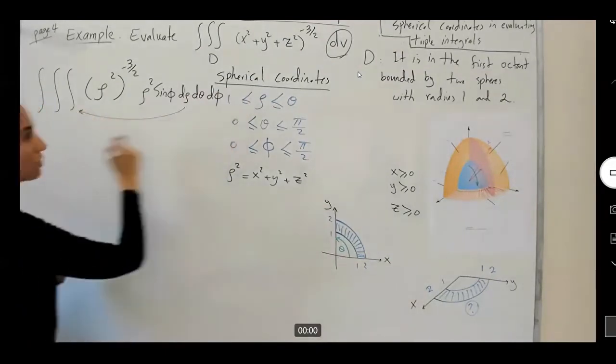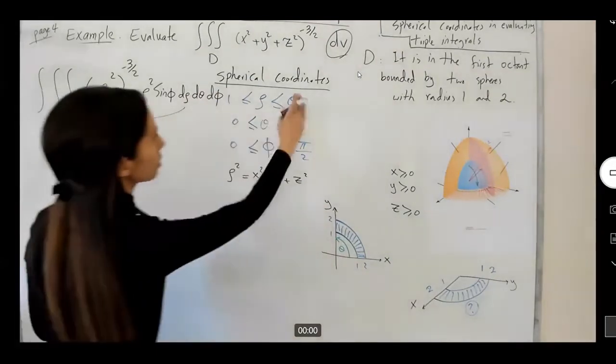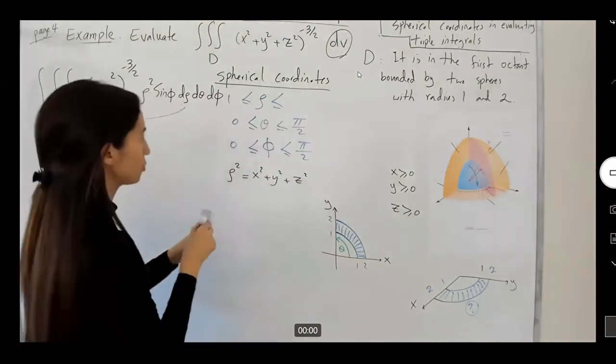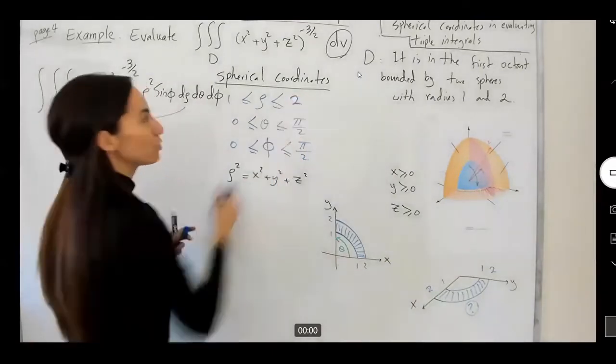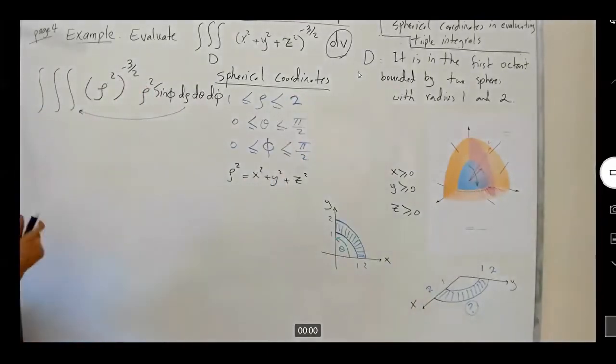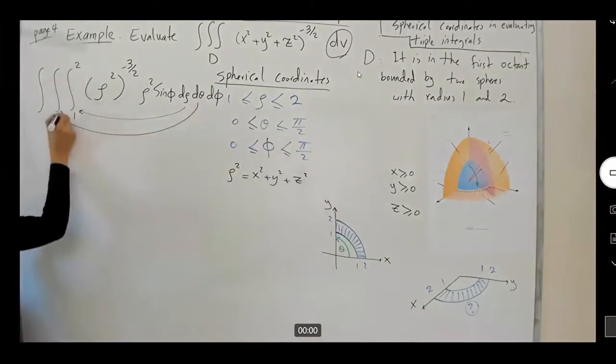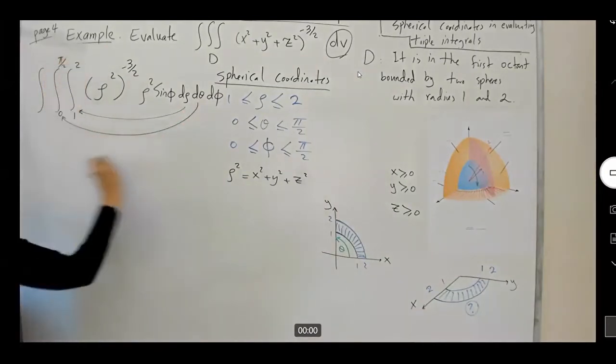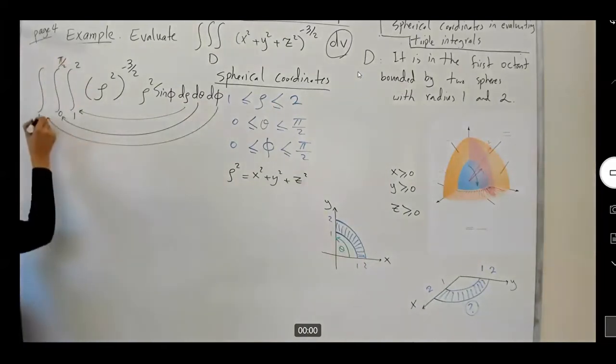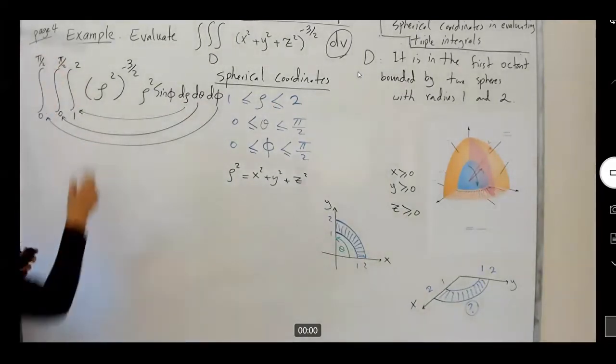My rho ranges between one and two. My theta ranges between zero to pi over two. And my phi ranges between zero to pi over two.